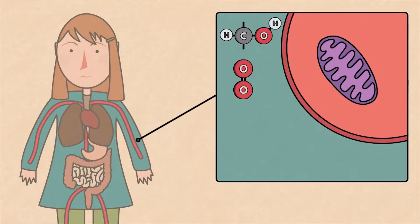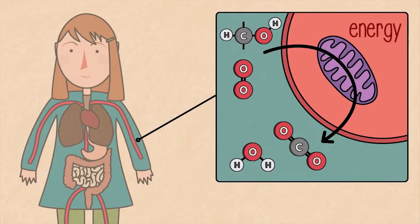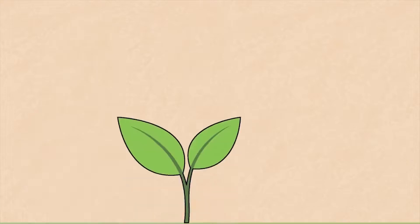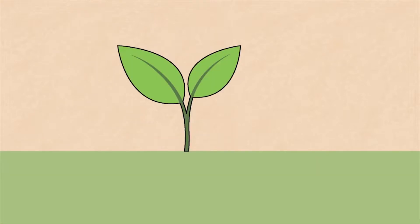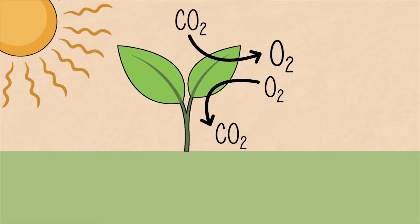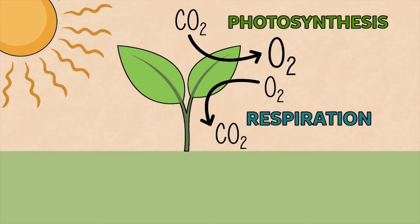There, the food and oxygen react and the blood takes the carbon dioxide back to the lungs to be excreted. Plants also respire, but you only notice it in the dark because in the sunlight they release more oxygen from photosynthesis than they use in respiration.